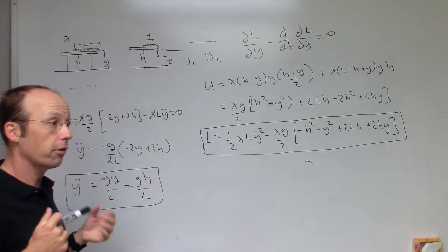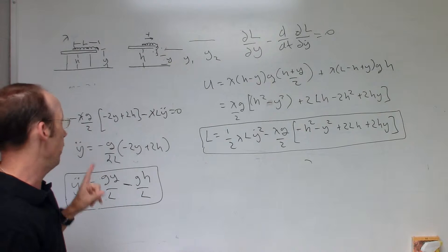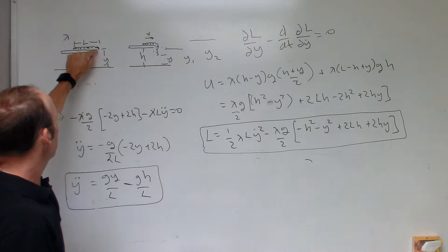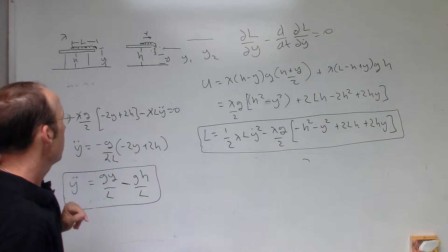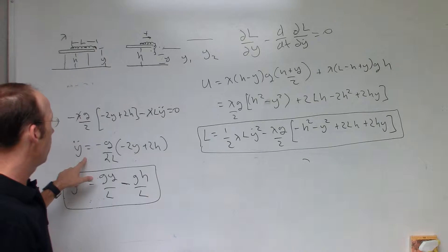So in order to do this from a Lagrangian, we need to find the degrees of freedom. In this case, it's one. There's only one coordinate that you need to determine everything. And I'm going to pick the distance from the bottom of the chain to the ground as y as my coordinate.